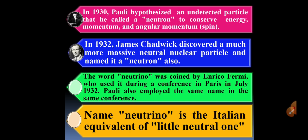Later on, Pauli also employed the same name in the same conference. Therefore, name neutrino is the Italian equivalent of little neutral one.